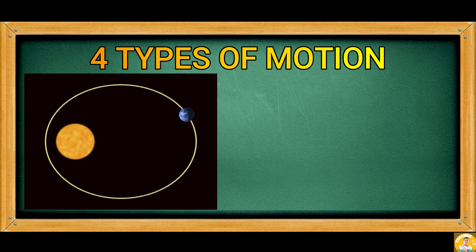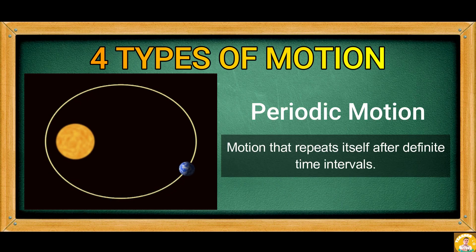The third picture shows the earth revolving around the sun which is an example of a periodic motion. The motion repeats itself after definite time interval.